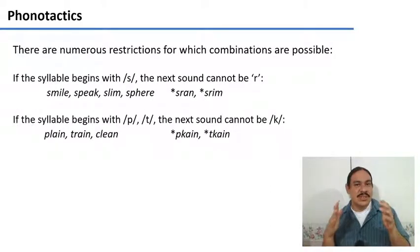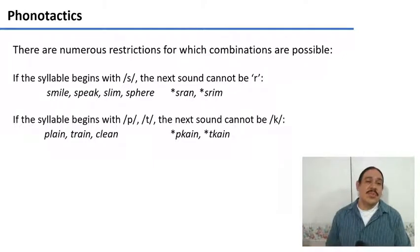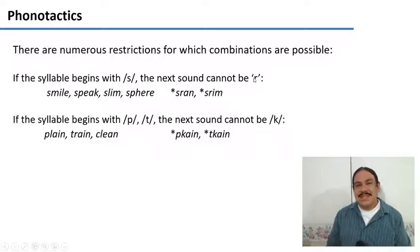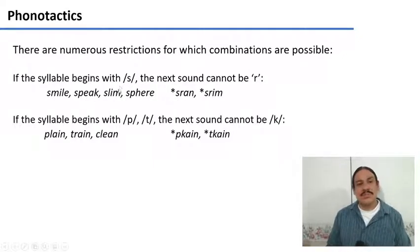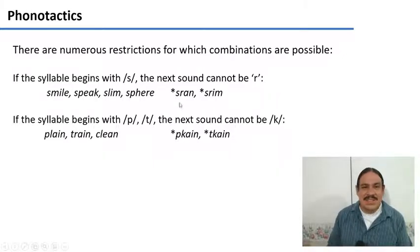But there's more to it than just consonant-vowel-consonant. There are numerous restrictions for what combinations are actually possible. For example, if the first consonant is an s, then the next sound cannot be an r. You can choose many sounds after the s — for example, the m in 'smile,' 'speak,' 'slim,' 'sphere' — but you cannot have syllables like 'sran' and 'srim' as real syllables of English.